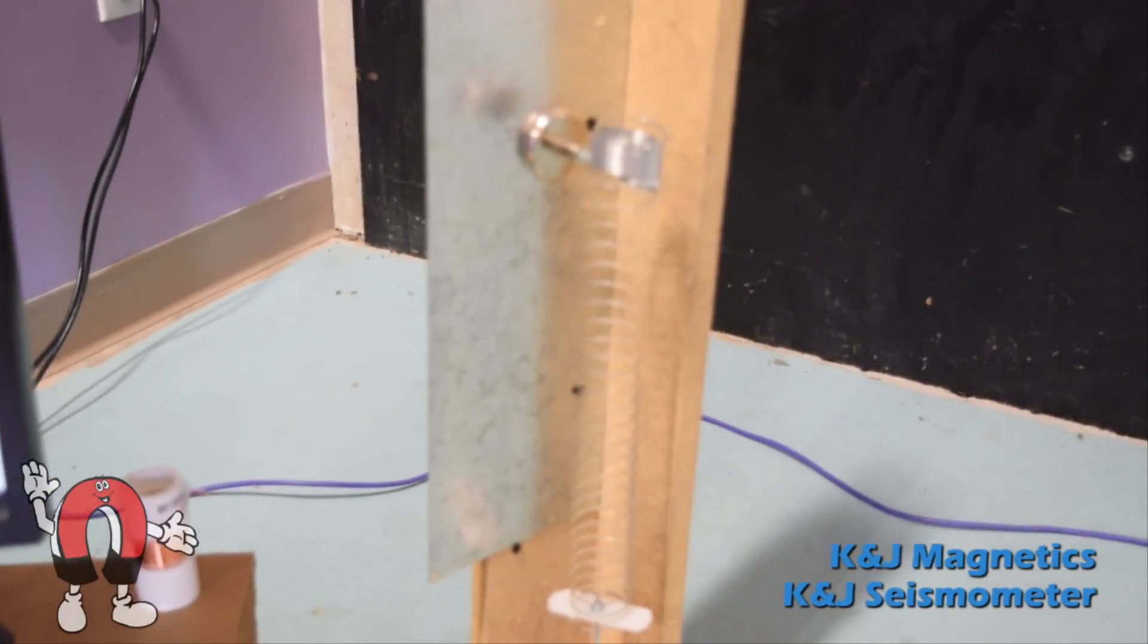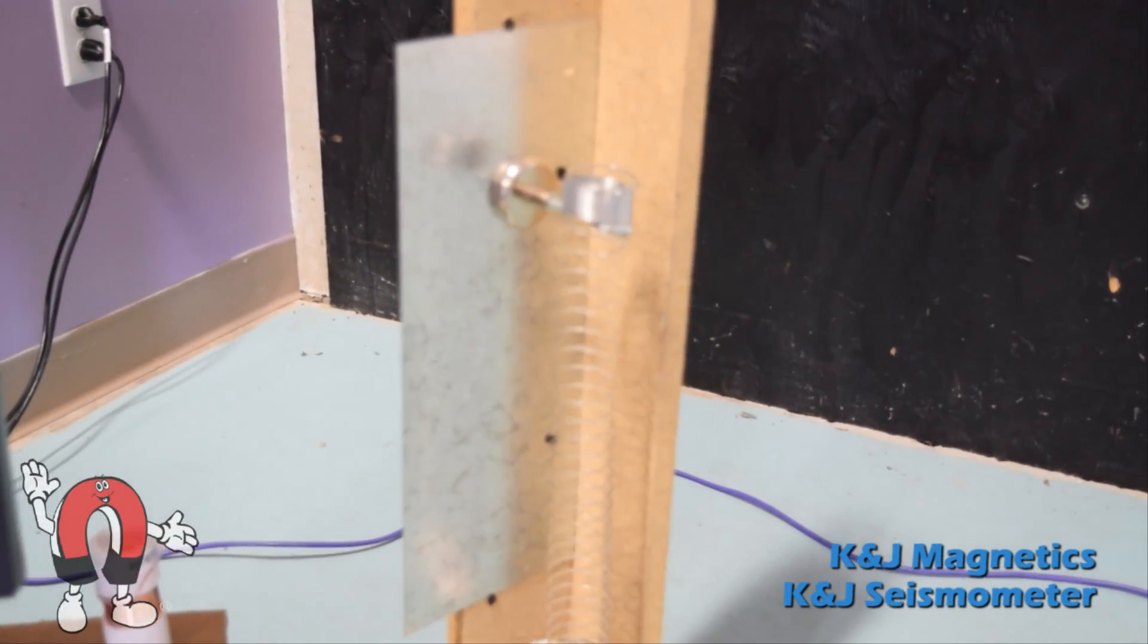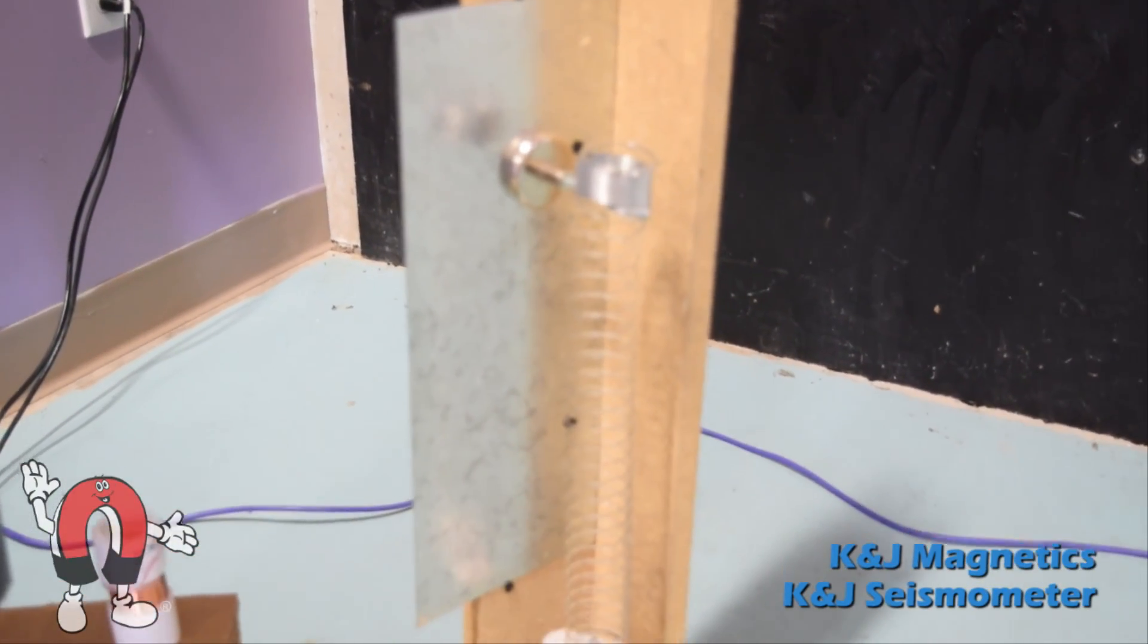First is the slinky. We've hung it off of a mounting magnet sticking to a steel plate, but you can hang it any old way. We just found this easy to adjust.